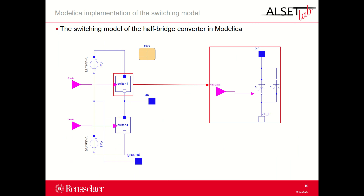In this slide, the switching model of the half-bridge converter implemented in Modelica is given. A detailed view of the switch block is also provided on the right, where you can see the transistor, the anti-parallel diode, and the gate for the firing signal.